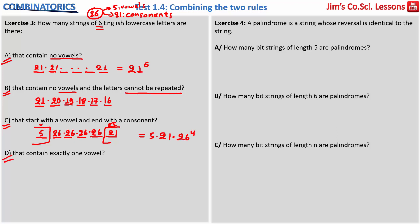And question D: that contain exactly one vowel. Let's see: 1, 2, 3, 4, 5, 6. Here it's not really easy because I have to consider the restriction first, and it says to me that it wants to use just one vowel, but the available vowels are 5.